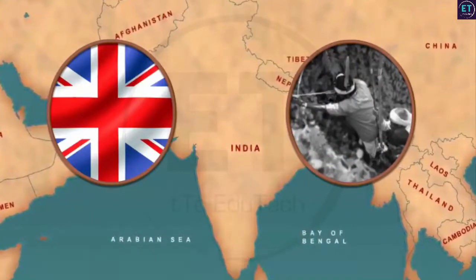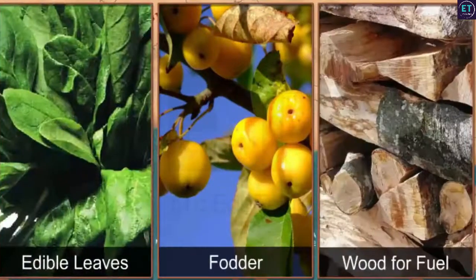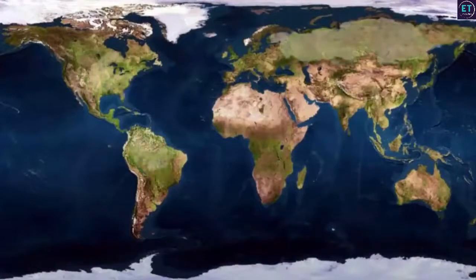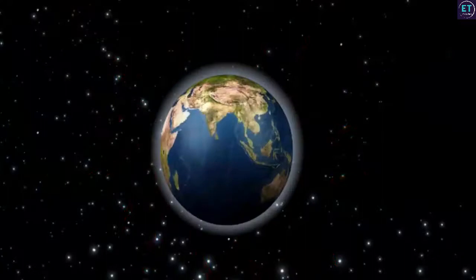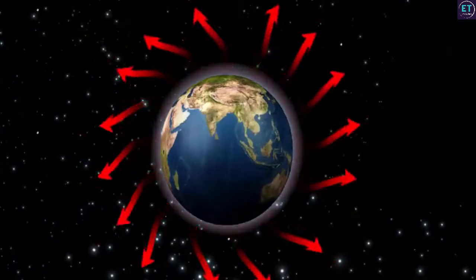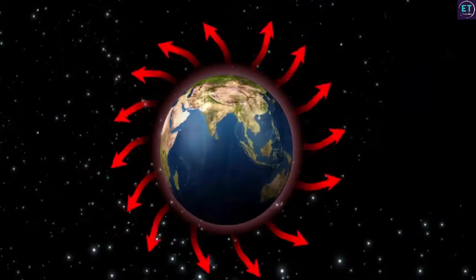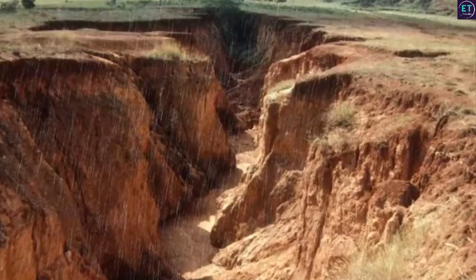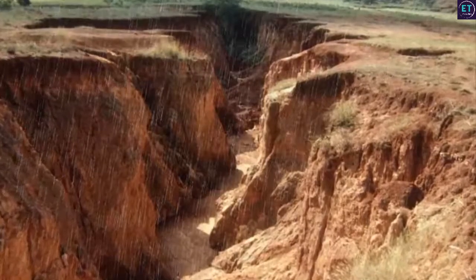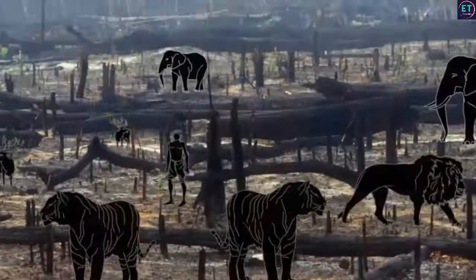Global warming is just one of the several harmful impacts of deforestation. In addition to this, the water cycle gets disturbed, soil erodes and several species of plants and animals get extinct. It also has an impact on the native dwellers of forests as they become homeless. Now that we have understood the adverse effects of deforestation, we must wake up and help efforts to prevent it.